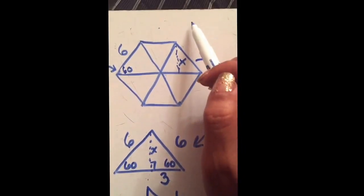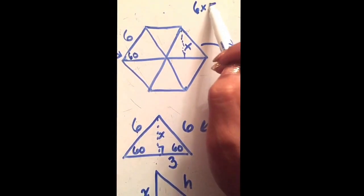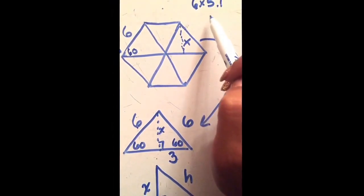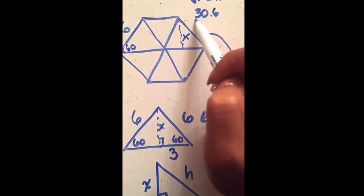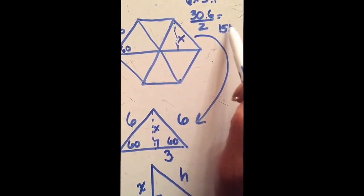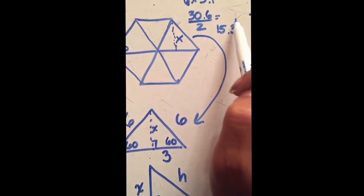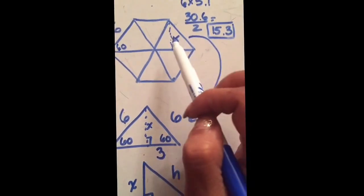For this triangle, if I know my base is 6, I'm just going to do my 6 times 5.1 and get 30.6 divided by 2. So one little triangle has an area of 15.3 square units.